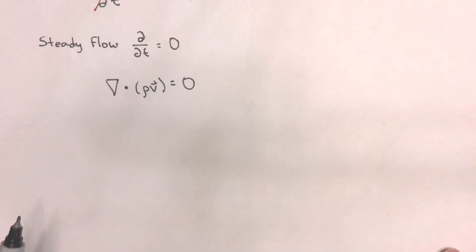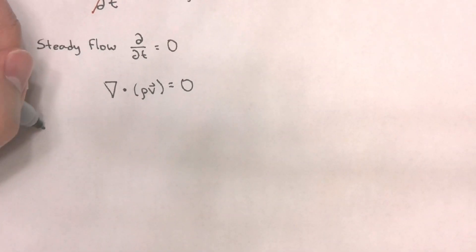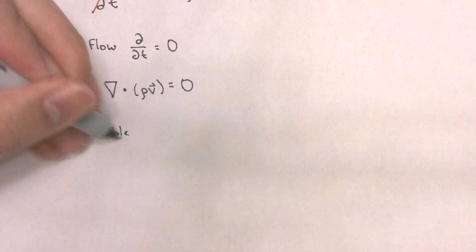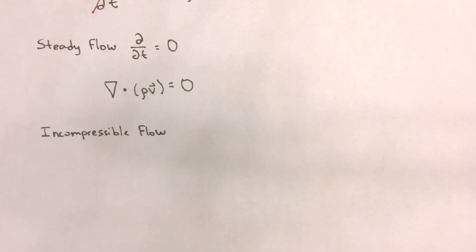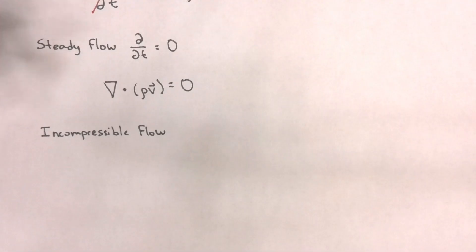Another simplification, which will be much more common for this course, is incompressible flow. We've already mentioned many times in this class that most liquids will be treated as incompressible. And in order for a flow to be incompressible, we have to assume that any change in density is equal to zero. That means that density does not change.